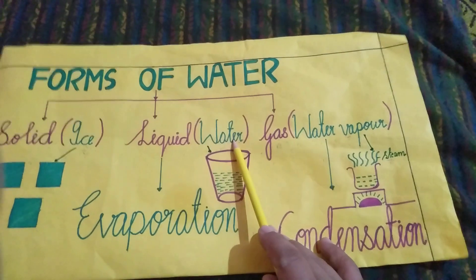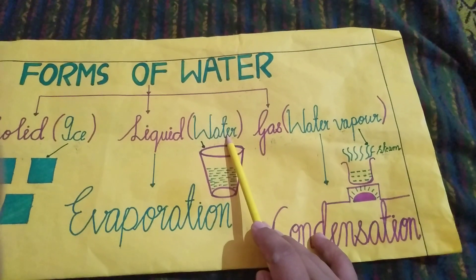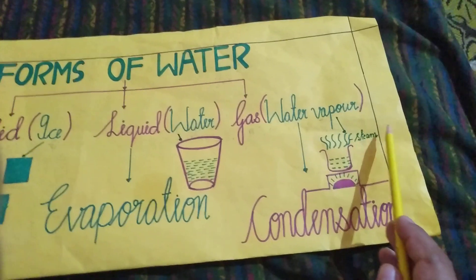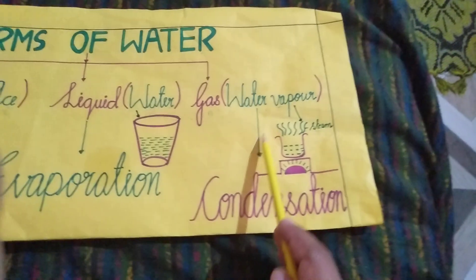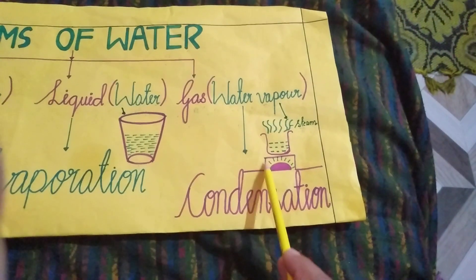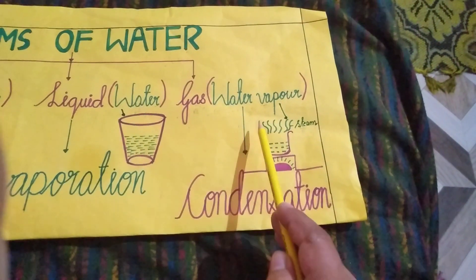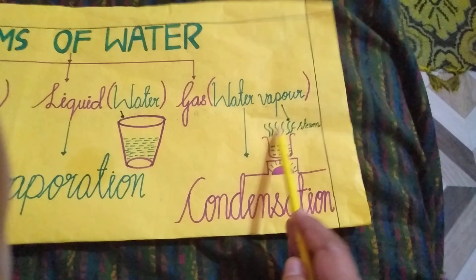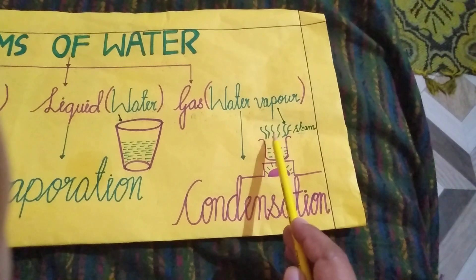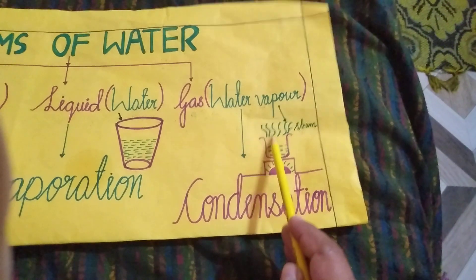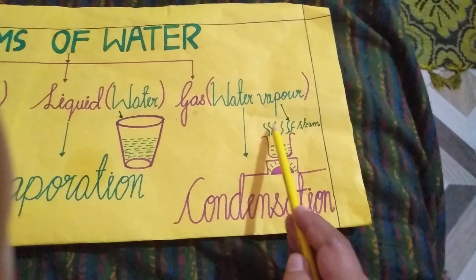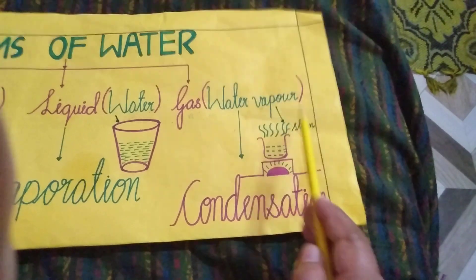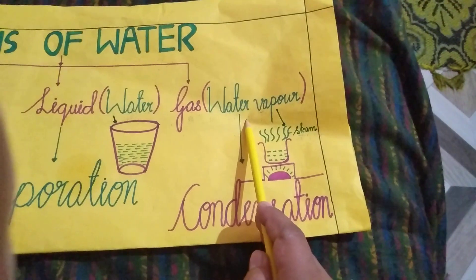Water can become water vapor with heating. Agar aap paani ko garam karo ge — jaisa ki aap yaha pe picture mein dek rahe hain — yie gas hai. Gas mein ek paani ki kettle hai. Ismein paani garam ho raha hai. Paani garam hone ke baad kya hua? Usse kya nikalne laggi? Bhaap — steam — jisse aap water vapor kahte hain.